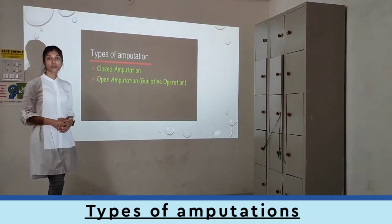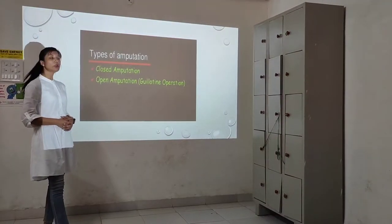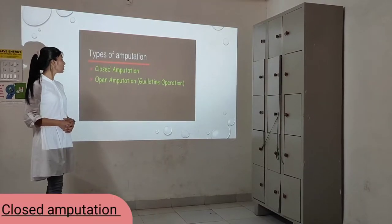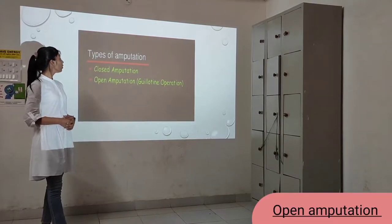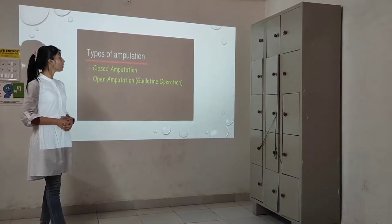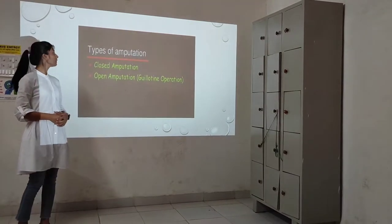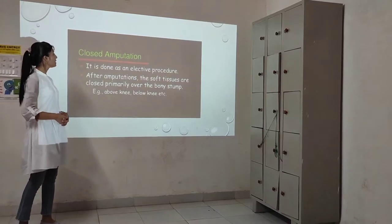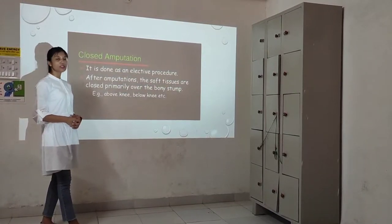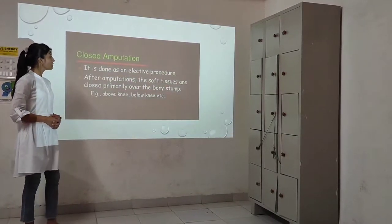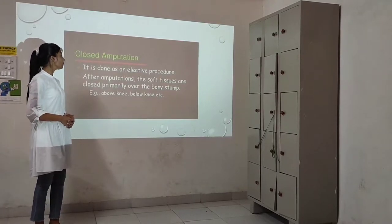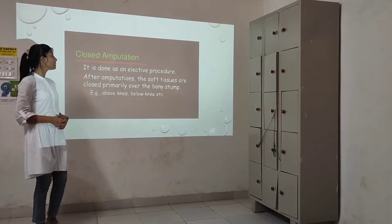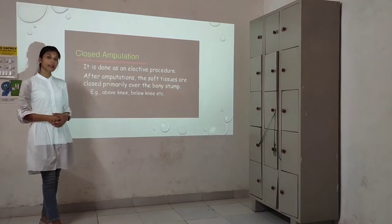What are the types of amputations? Basically, two types: closed amputations and open amputations. Open amputation is also called guillotine operation. Closed amputation is done as an elective procedure. After amputation, the soft tissues are closed primarily over the bony stump — for example, below knee, above knee, etc.